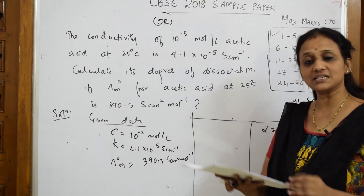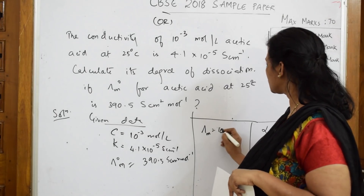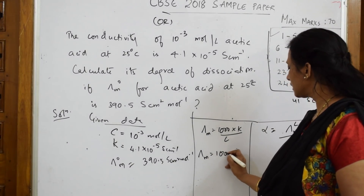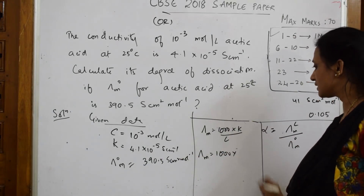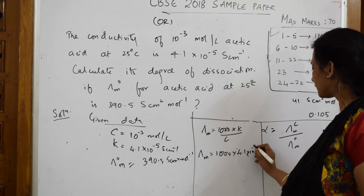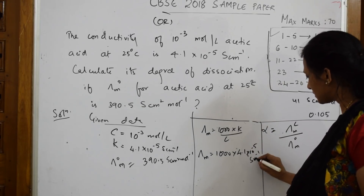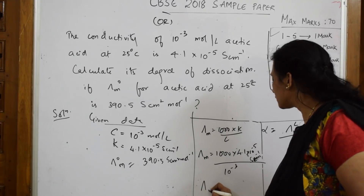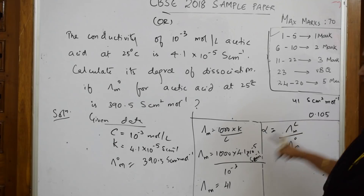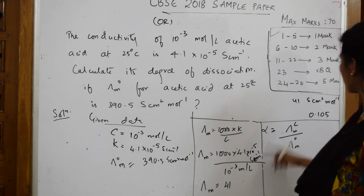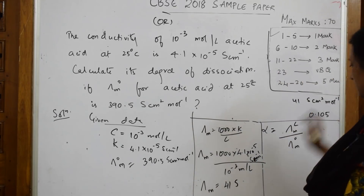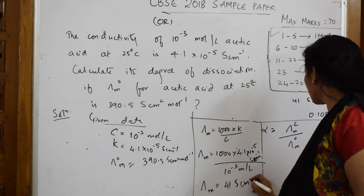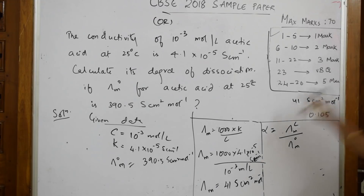The formula for molar conductivity is Λm = (1000 × κ) / c. Substituting: Λm = (1000 × 4.1 × 10⁻⁵) / 10⁻³. Solving this gives Λm = 41 S cm² mol⁻¹. The units work out: siemens × centimeter² × mole⁻¹.